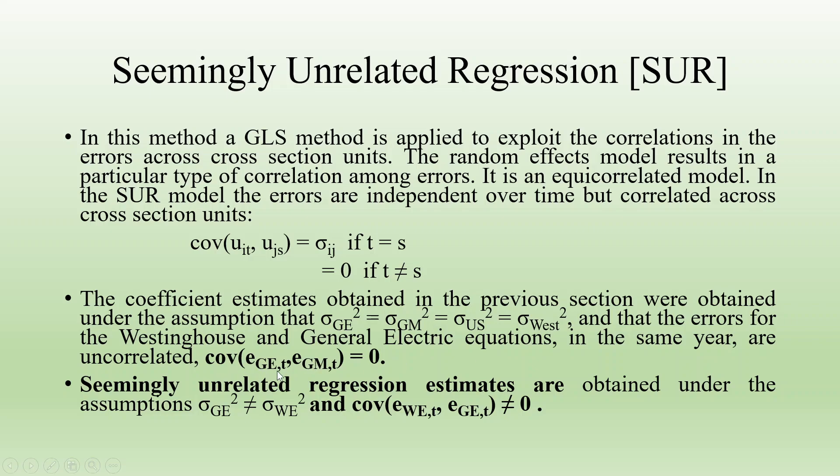You can see here covariance E_GE and E_GM for that particular year is equal to 0. But in case of seemingly unrelated regression, estimates are obtained under the assumption that the variance between the two firms are not equal and the covariance between the two error terms in the same year is not equal to 0.